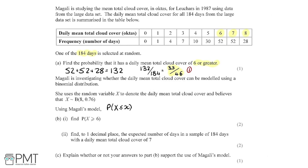To demonstrate, we write out numbers around 6: so we have 4, 5, 6, 7, 8. We want the probability that X is greater than or equal to 6, which covers the region from 6 upward. The trick is to flip this over: the complementary region is X less than or equal to 5. So the probability of X greater than or equal to 6 equals 1 minus the probability that X is less than or equal to 5.